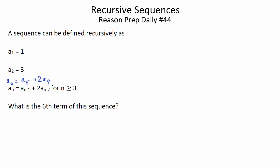This kind of problem seems more complicated than it really is. Really, you're just taking each term and using this rule to figure out the next one, and you keep going until you get to where you want to go. So, let's start by finding the 3rd term. That's just going to be the 2nd term plus 2 times the 1st. We've got those — they've been defined for us. So, it'd be 3 plus 2 times 1, which gives us 5.